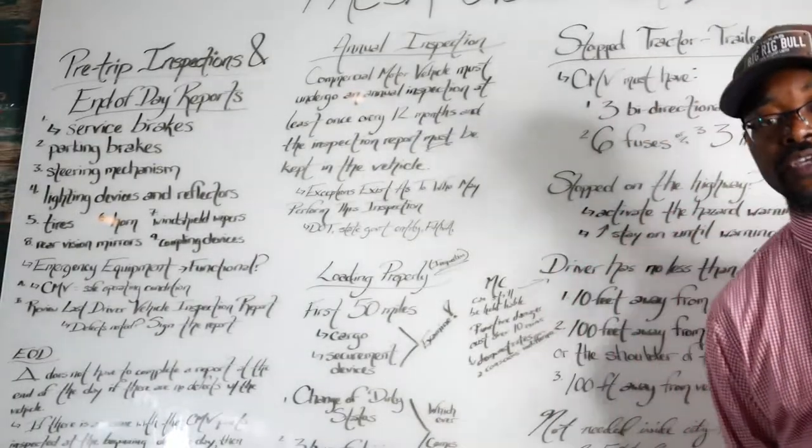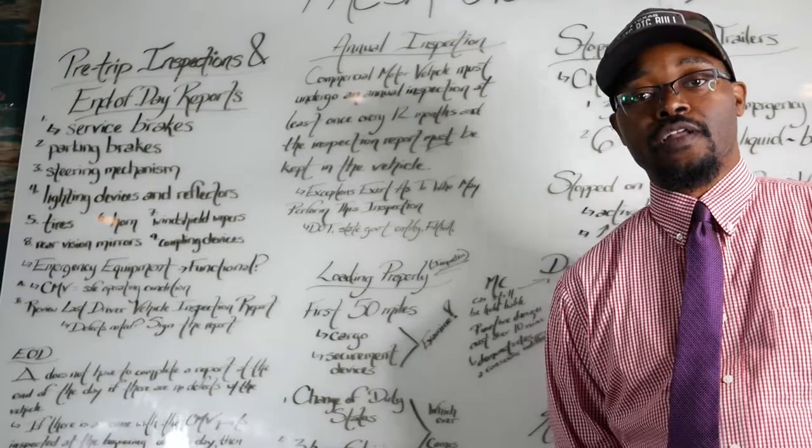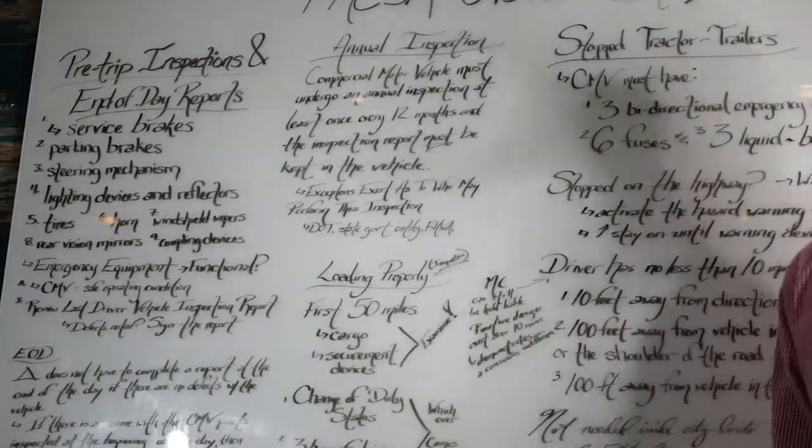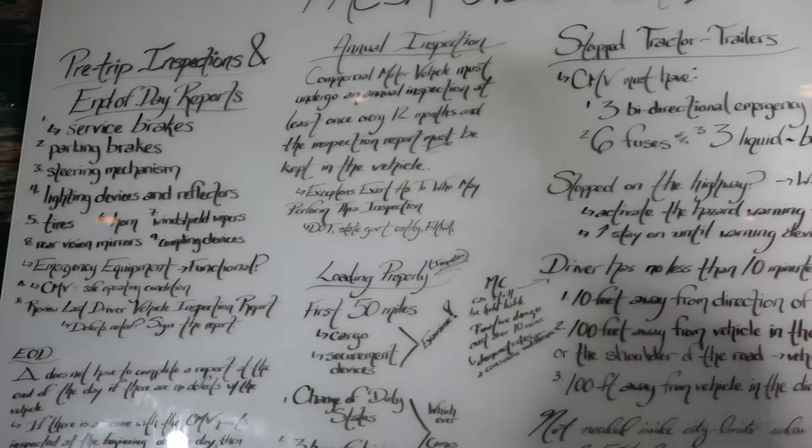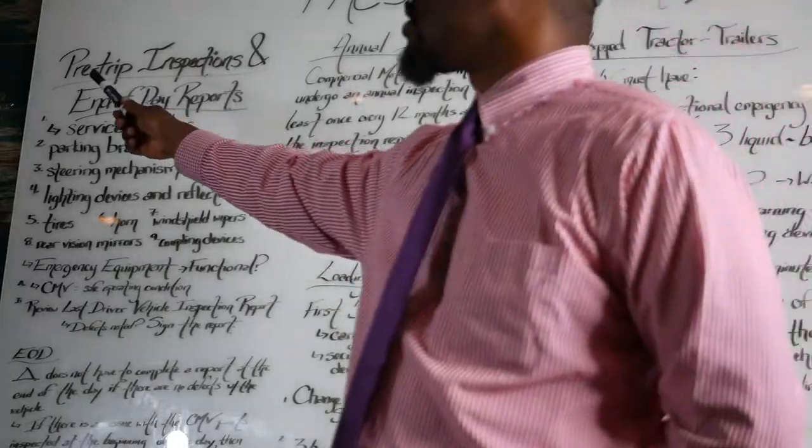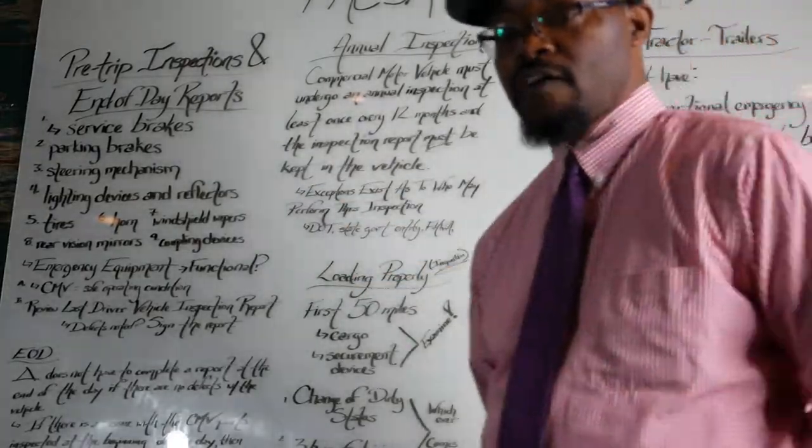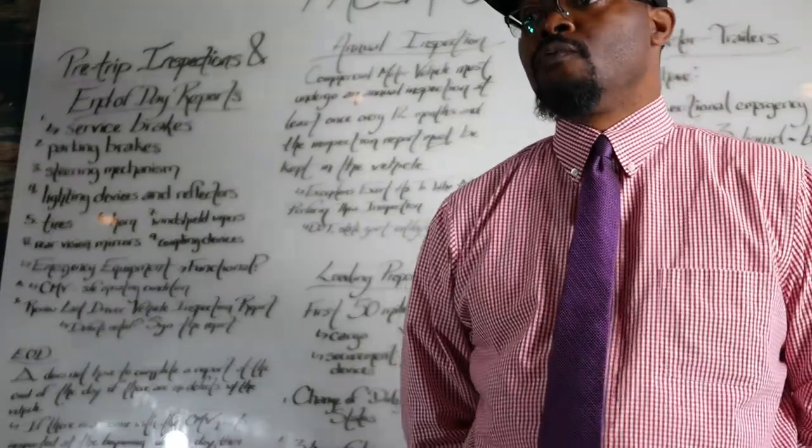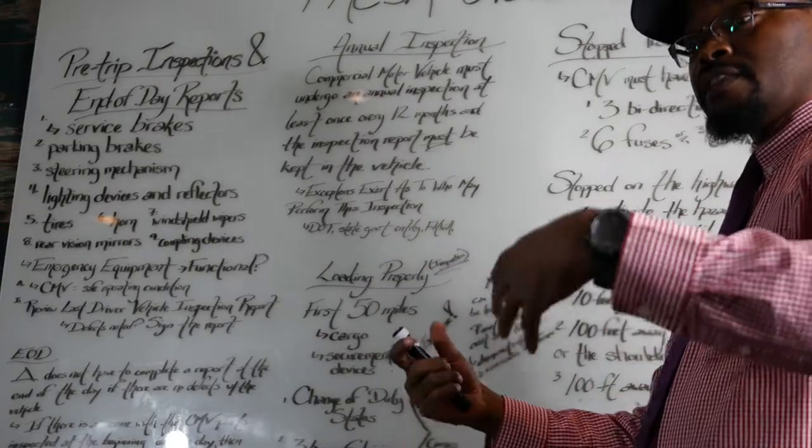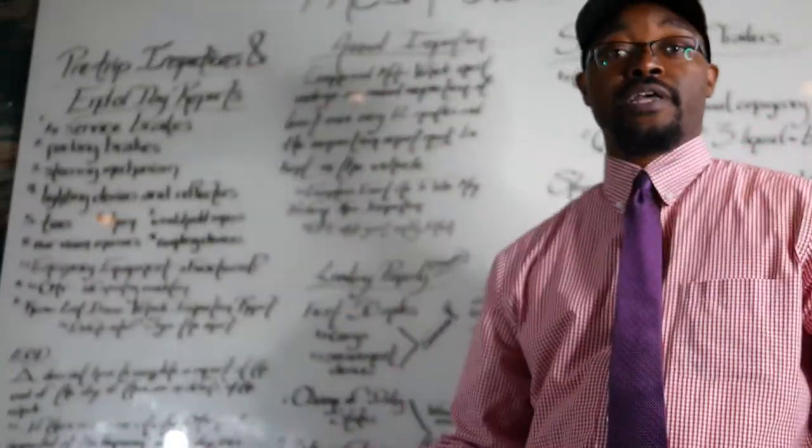Alrighty, so we're here again on Monday and we're dealing with part two of the FMCSR overview. We're talking about the FMCSR overview part two. What I'm focusing on this time is pre-trip inspections and end of day reports. Every time a truck driver gets ready to operate a commercial motor vehicle, they have to fill out a pre-trip inspection report that details they went over certain things dealing with the truck and its maintenance before they actually operate it.